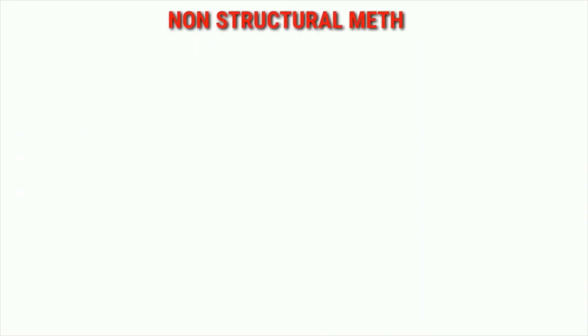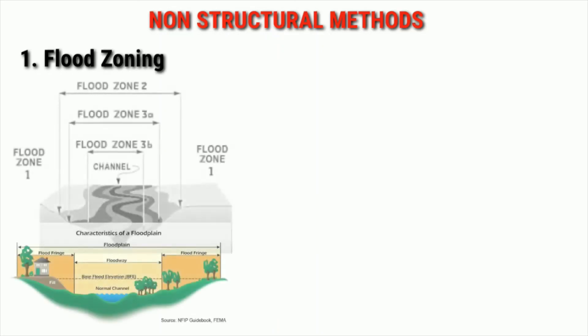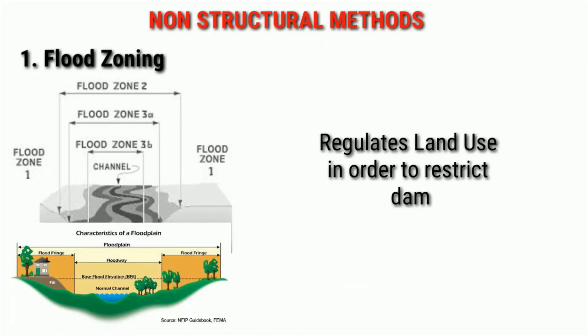Now we will switch to the non-structural measures for flood control. These measures involve planning policies for people as well as areas to reduce the impact of floods. The first non-structural measure is floodplain zoning, whose basic concept is to regulate land use in the floodplains in order to restrict damage due to floods.